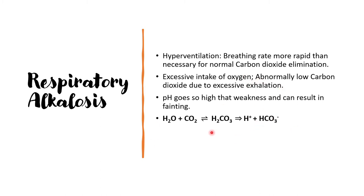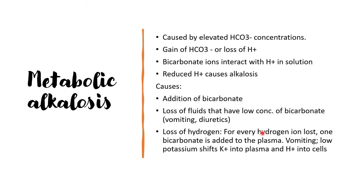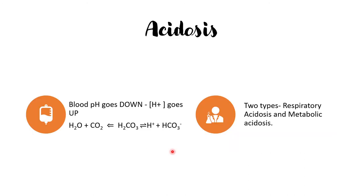Metabolic alkalosis occurs due to elevated or high concentration of bicarbonate ion, or it can be due to the loss of the proton moieties. It can occur due to the generation of more basic moieties during metabolic activities, or due to the addition of bicarbonate ion and loss of fluid that has low concentration of bicarbonate, and also due to the loss of hydrogen ions.